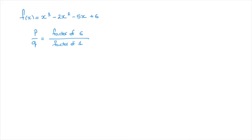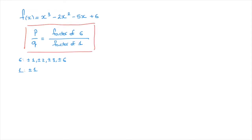What this provides us with is a method for listing all the potential rational roots of a polynomial function. The factors of 6 would be plus or minus 1, plus or minus 2, plus or minus 3, and plus or minus 6. And the factors of 1 would just be plus or minus 1. Since any rational root must be of this form, any potential rational root is obtained by dividing each of the factors of 6 by the factors of 1, which in this case is just 1. Dividing by 1 doesn't change the value, so we can list all the potential rational roots as plus or minus 1, plus or minus 2, plus or minus 3, and plus or minus 6.